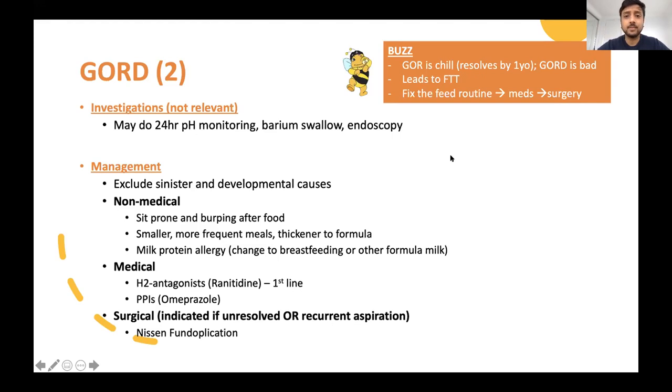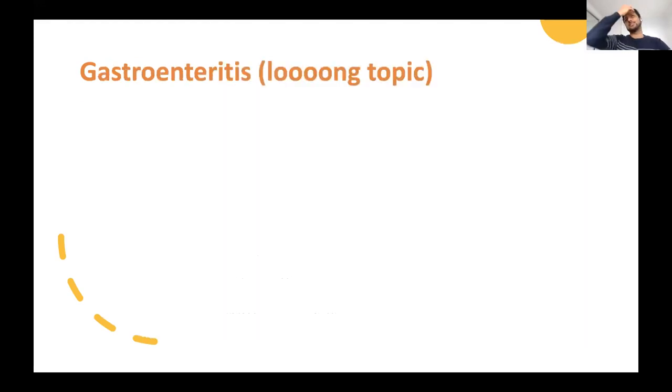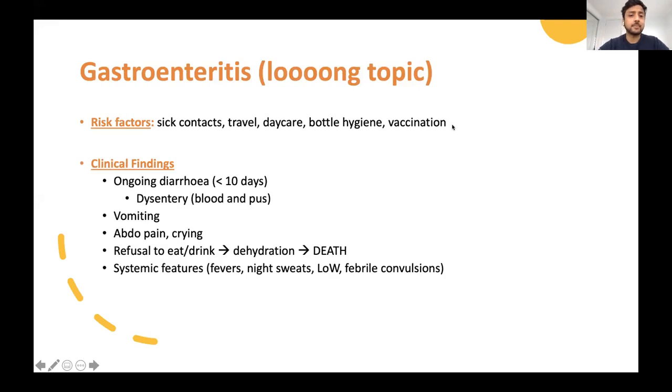Next is gastroenteritis, a really long topic. Risk factors are self-explanatory. Clinical findings are the same as adults: diarrhea, vomiting, abdominal pain, and systemic features. Things different in peds: crying is how kids reflect pain, refusal to eat and drink leads to dehydration, which is a common cause of death in kids. They can quickly deteriorate. Another feature is febrile convulsion.